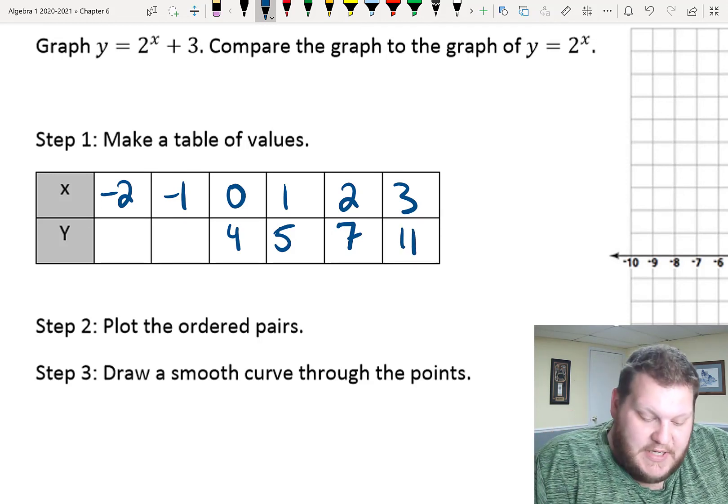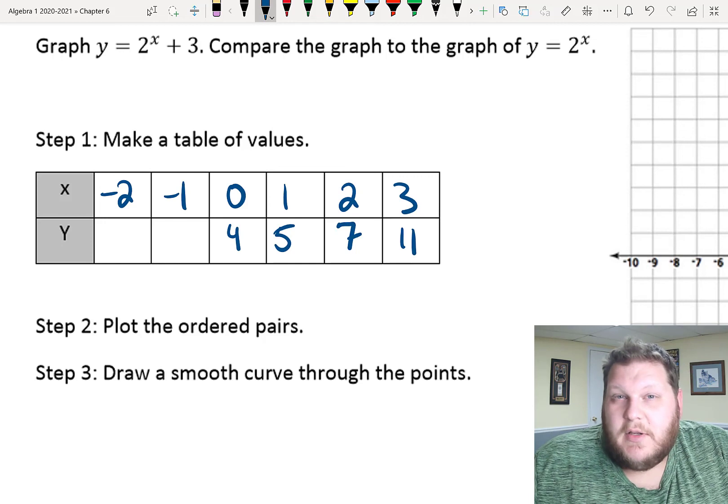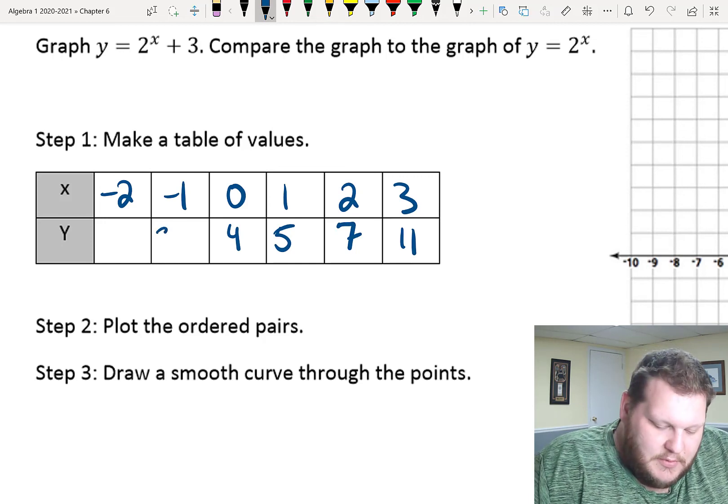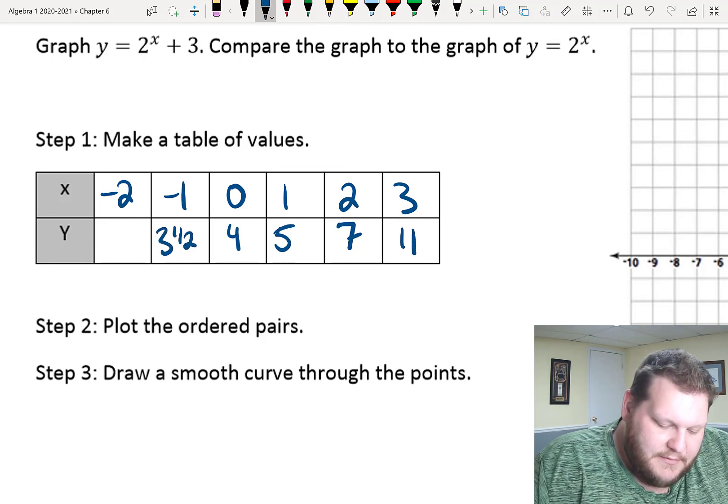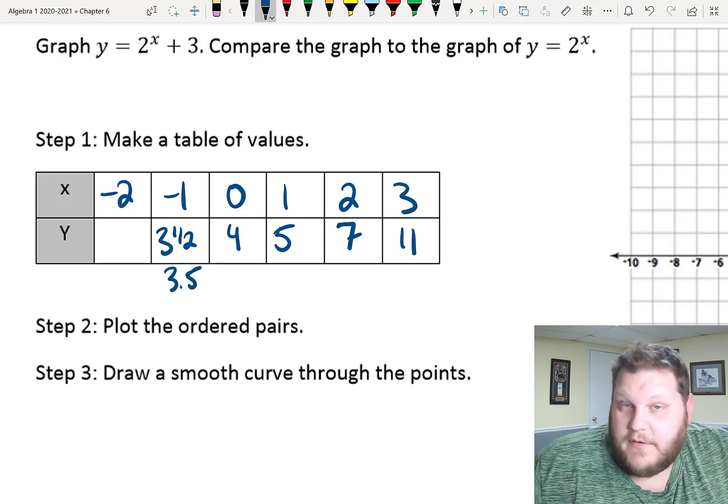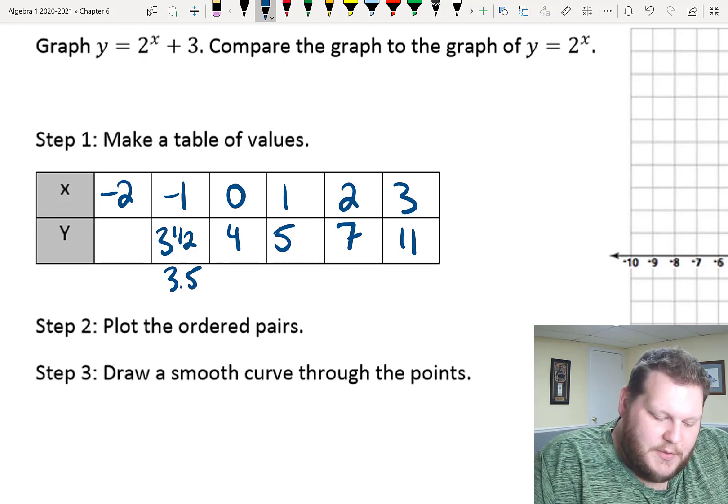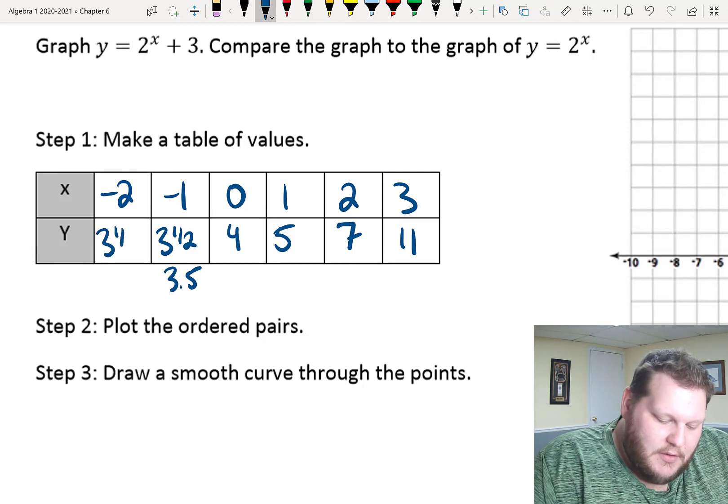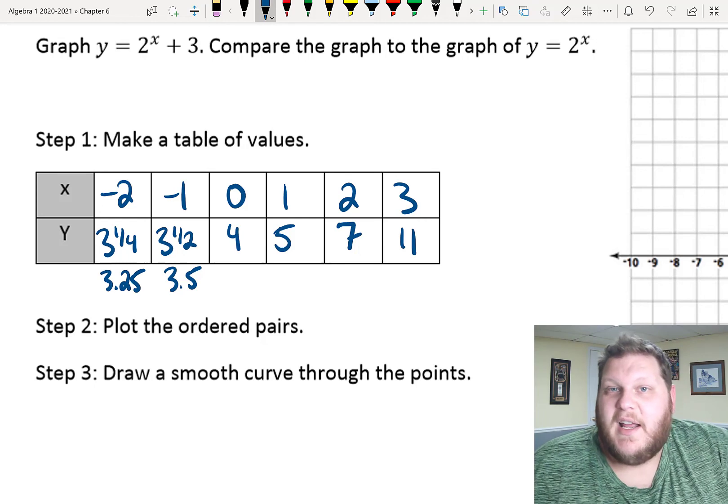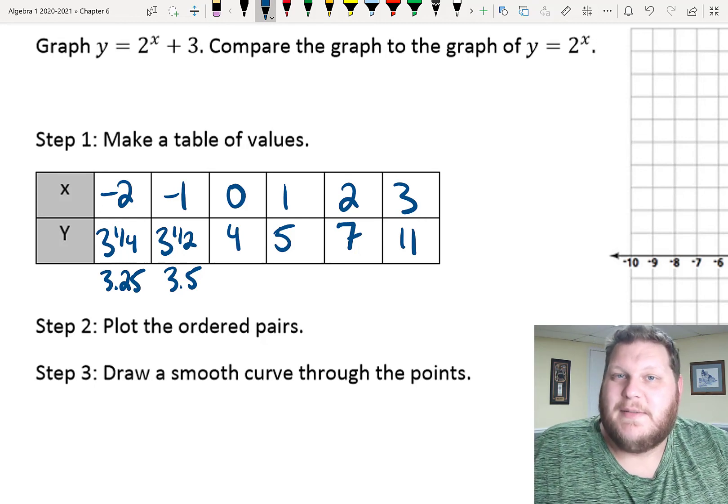And then, as you work backwards in your table, negative 1 gave me a half originally. So, add 3 and I get 3 and a half, or 3.5 if you're a decimal person. And then, 2 to the negative second power was a fourth. So, plus 3 would be 3 and 1 fourth, or 3.25, depending on your philosophical beliefs, and if you're a decimal person.